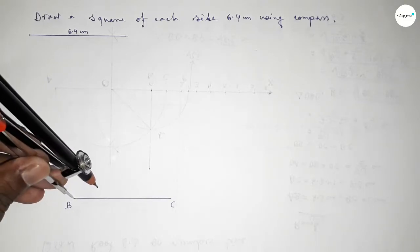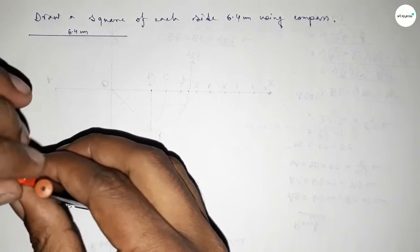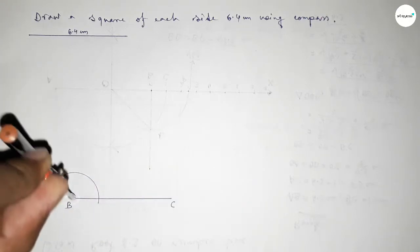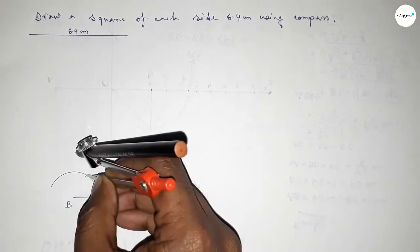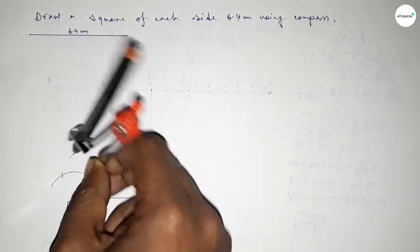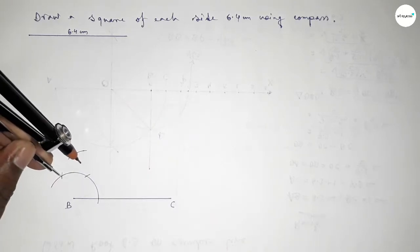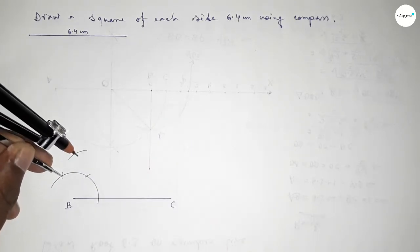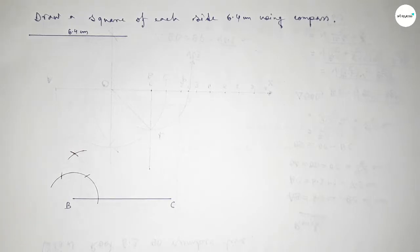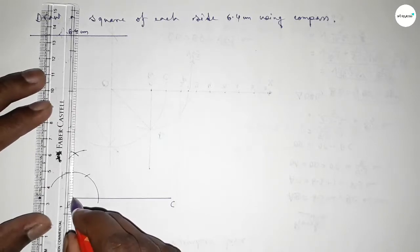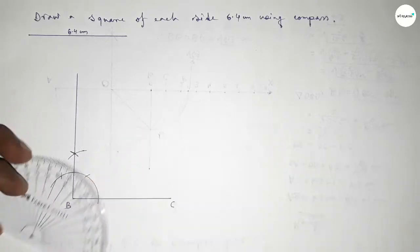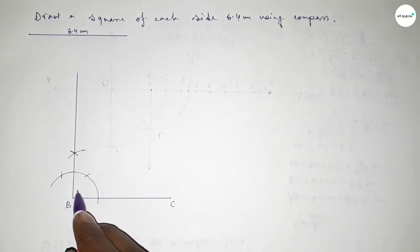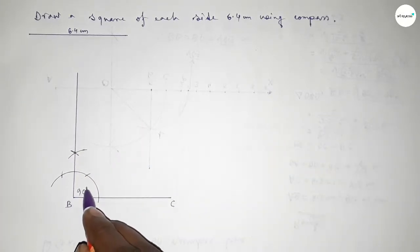Now we have to draw a 90-degree angle on point B. Putting the compass on point B, taking any length, and drawing an arc. With the same length, cutting arcs at two positions, then drawing another arc where both curves intersect. Joining this line to get a 90-degree angle. Checking — this is perfectly a 90-degree angle.